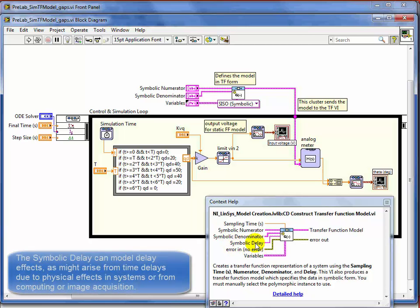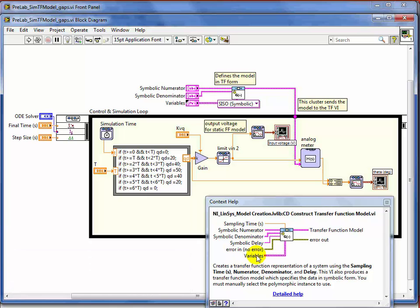You can actually put a delay, but we won't use that. Within the symbolic numerator you can have the different parameters that we have. Then you can put in a cluster in here that has the relationship between the different parameters that you have here and the actual numerical variables. I'm going to show you how to do that.